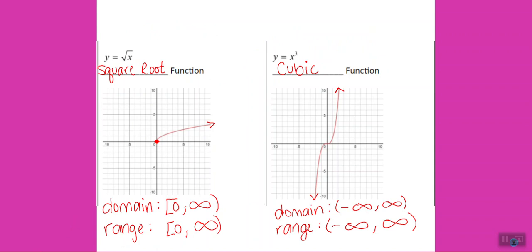One thing I forgot to mention about the square root function is its end behavior. Because it only has one end, we're only going to have one line in our end behavior. As x goes to positive infinity — because the arrow is pointing to the right — f(x) goes to positive infinity because it's going up. We don't have the 'as x goes to negative infinity' statement like we normally do because there's no arrow pointing to the left.